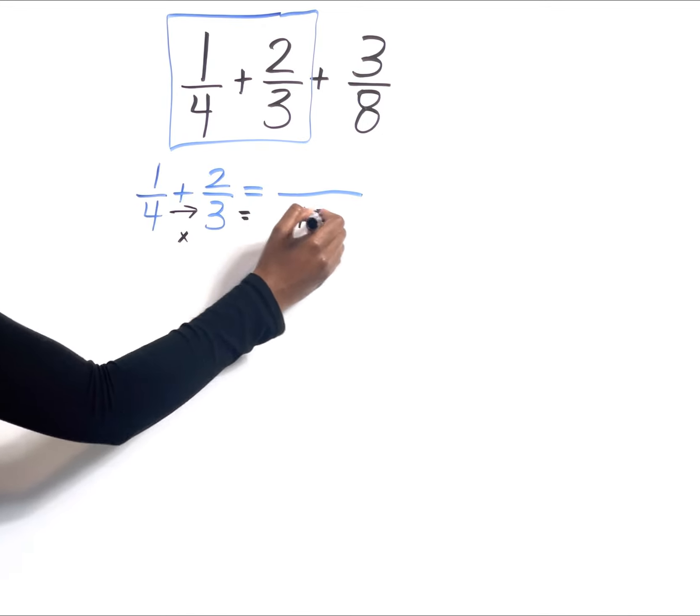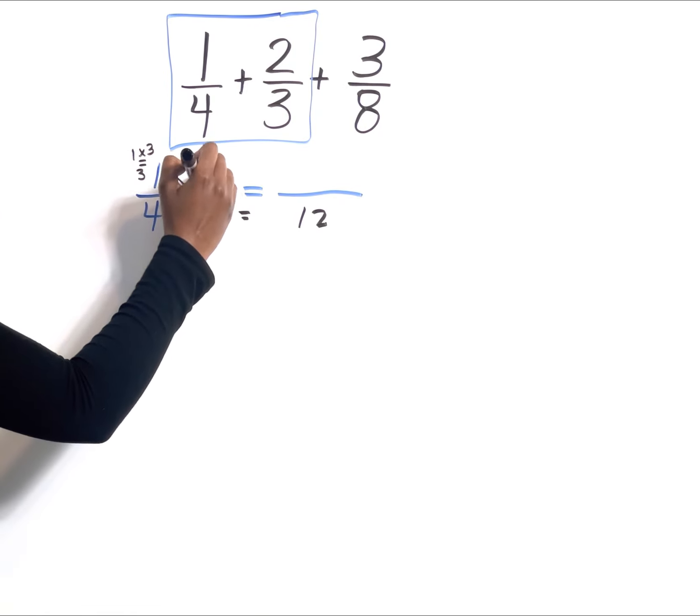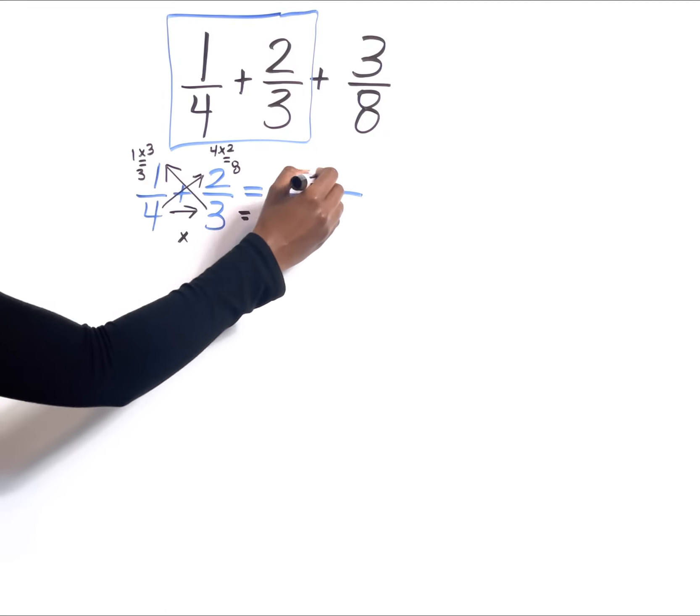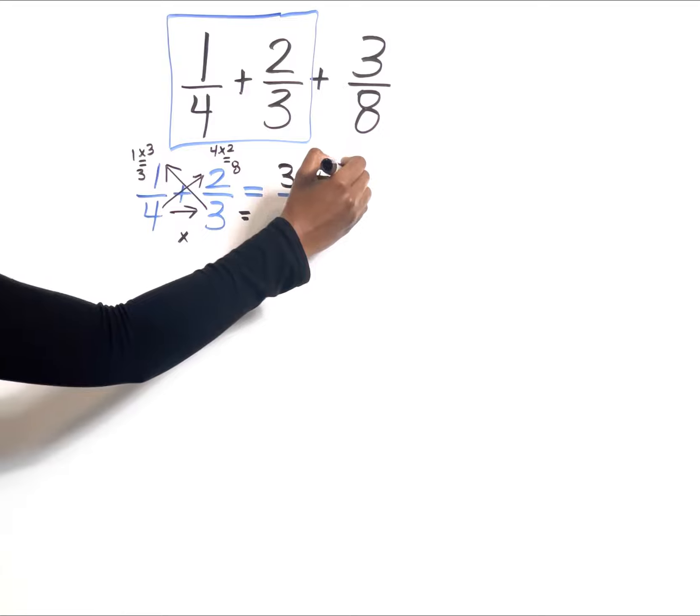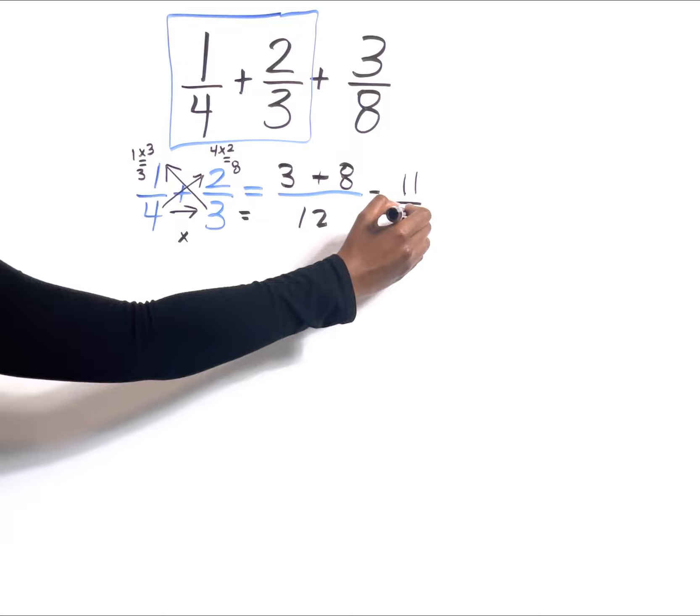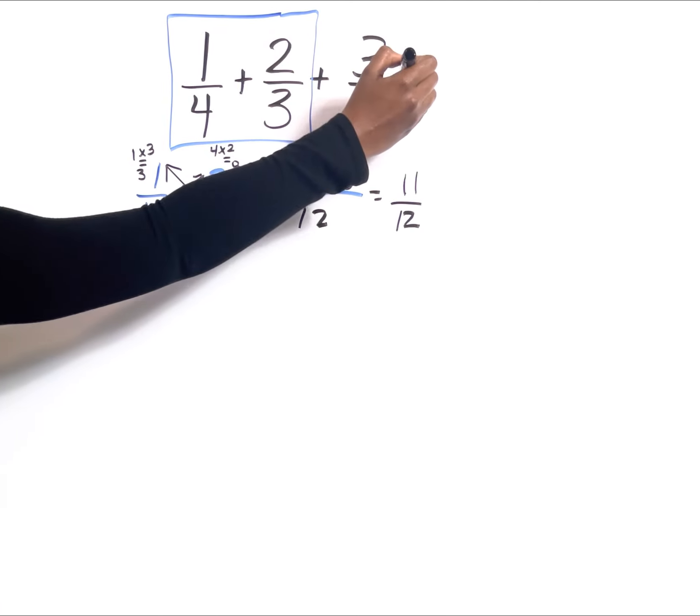Then we're going to cross multiply diagonally, so 1 and 3 give us 3, and 4 and 2 give us 8. We're going to insert 3 and 8, then simplify. So 3 + 8 gives us 11/12. Now we're going to bring down this 3/8 and repeat the same process.